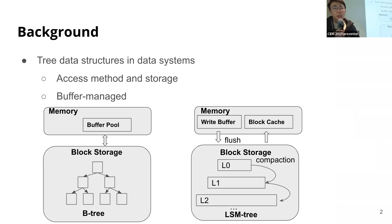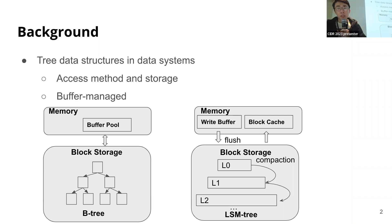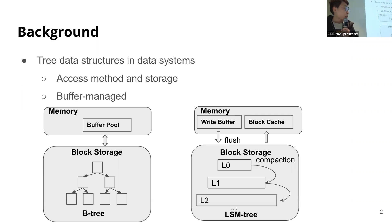Tree data structures are widely used in data systems. Applications include access methods and storage management. Many usages store data on a block storage device and access through a buffer pool interface. For example, a buffer-managed B-tree is a de facto standard in indexing and storage management in traditional relational databases. Another classic tree data structure, the log-structured merge tree, which optimizes for writes, is also seeing wide adoption in recent developer applications.